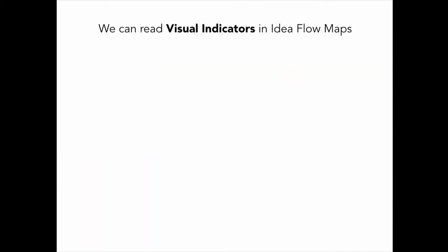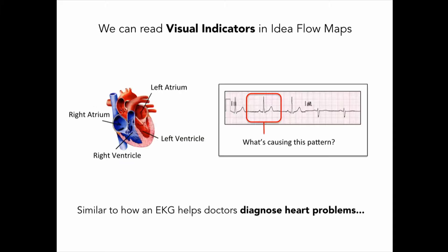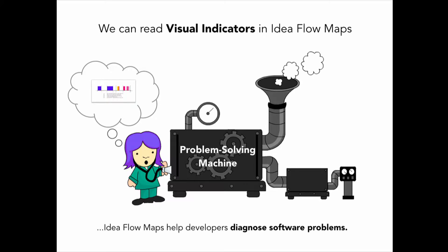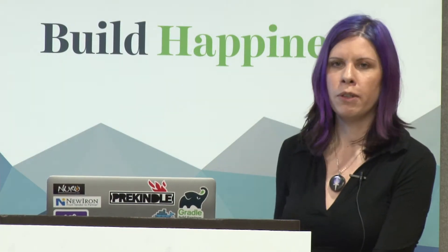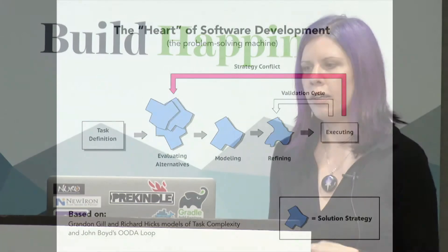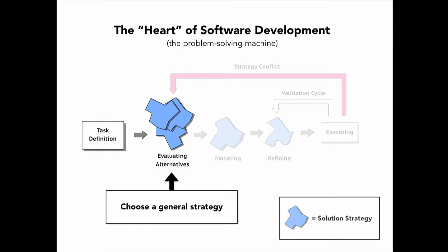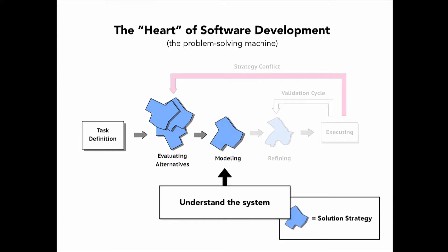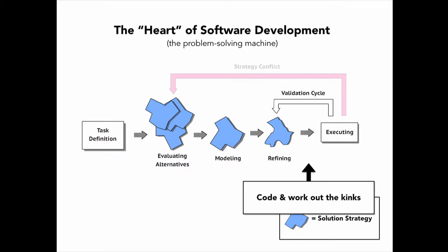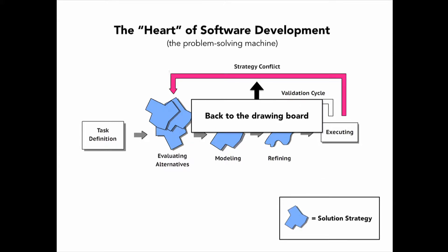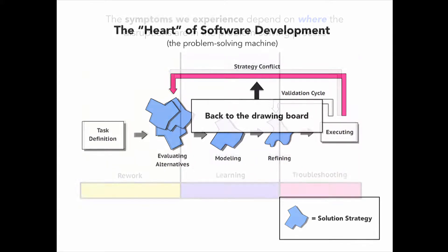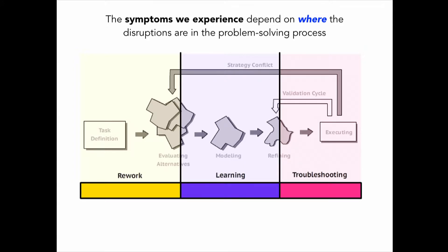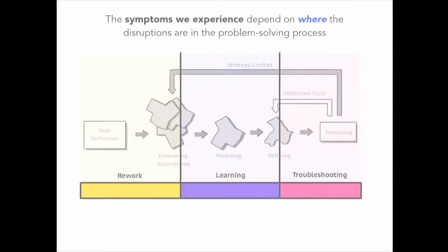I started realizing I was learning to read these visual indicators in the IdeaFlow maps — it reminded me of an EKG of how doctors use to diagnose heart problems. IdeaFlow maps can help developers diagnose software problems. What I was actually visualizing and recording was the problem-solving process itself. I started doing a lot of cross-discipline research in cognitive science and put together a model of how we go through this problem-solving process: first we choose a general strategy, evaluate alternatives, build a conceptual model of how the system works, then write some code and work out the kinks in a validation cycle. We experience different symptoms based on where the friction is within the problem-solving process.